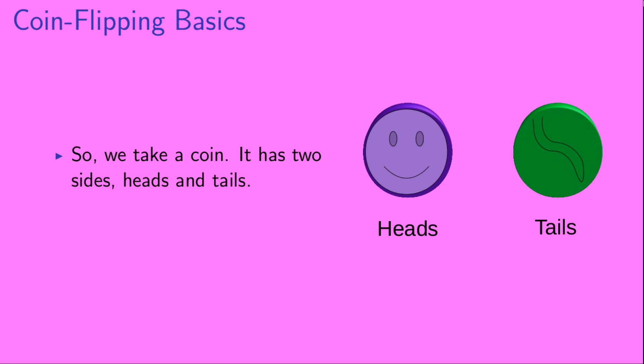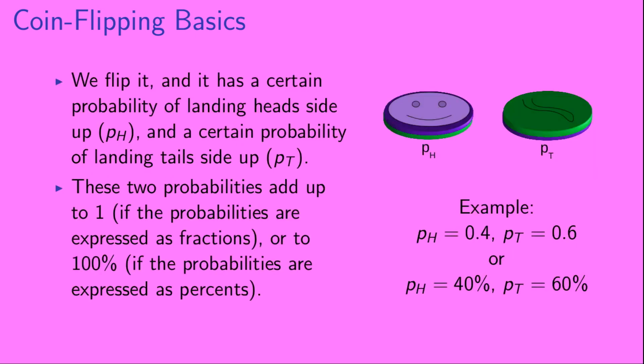Okay, so we take a coin. It has two sides, heads and tails. We flip it, and it has a certain probability of landing head-side up, which we're going to call pH, and a certain probability of landing tail-side up, which we're going to call PT.